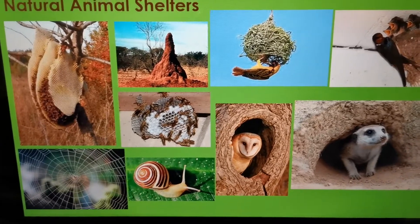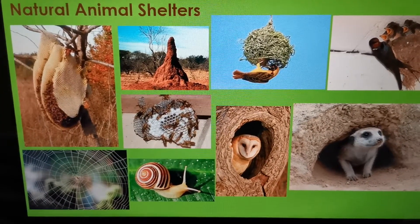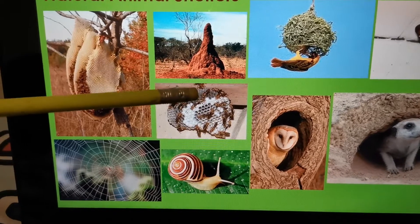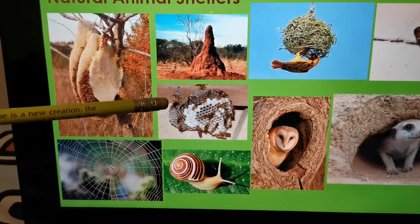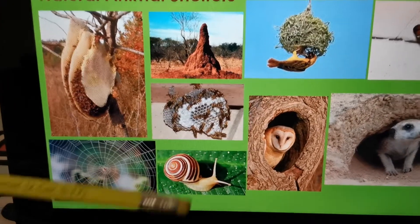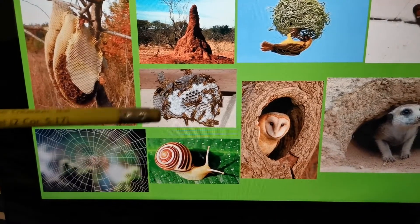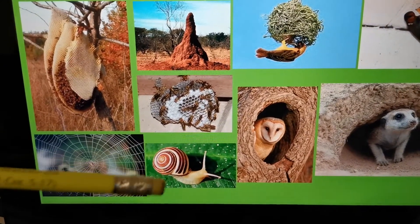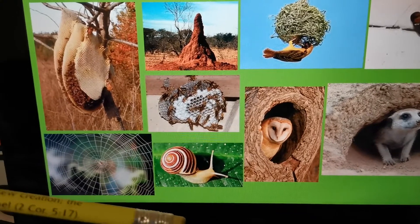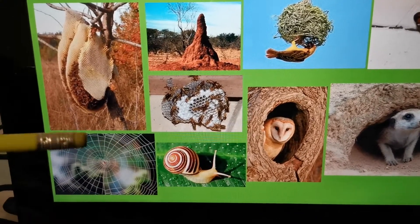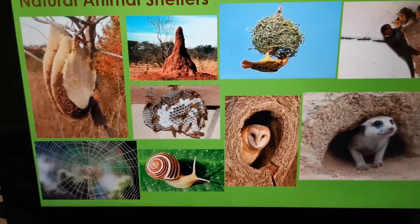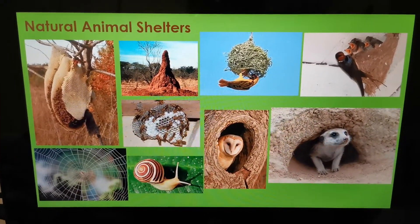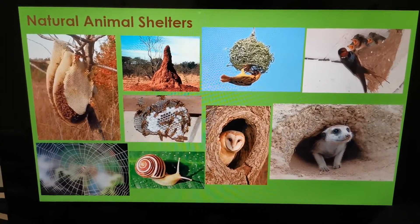Here we have an owl in a hollow tree — usually they find these hollow trees. Then we have a wasp nest — they build it out of mud as well. Here we have a snail and the shell of a snail — it's born with that shell. And then we have a spider's web, and we all know that spiders build their own webs. So these are Natural Animal Shelters.